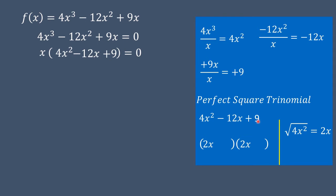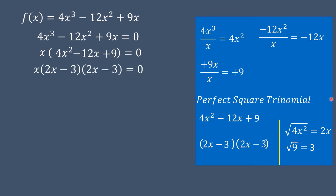The expression 4x² - 12x + 9 is a perfect square trinomial. Extract the square root of the first term: √(4x²) = 2x. Extract the square root of the third term: √9 = 3. Following the sign of the middle term (negative), we get (2x - 3)(2x - 3). Checking by FOIL: first terms give 4x², outer and inner terms give -6x - 6x = -12x, and last terms give positive 9. So we have x(2x - 3)(2x - 3) = 0.